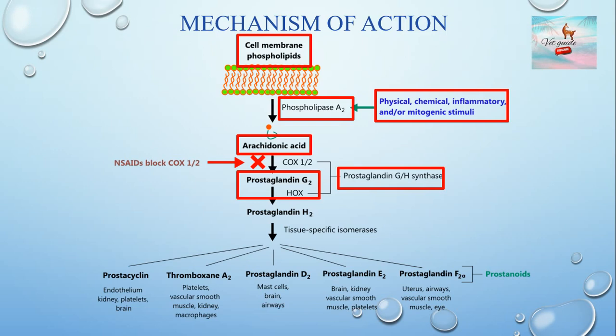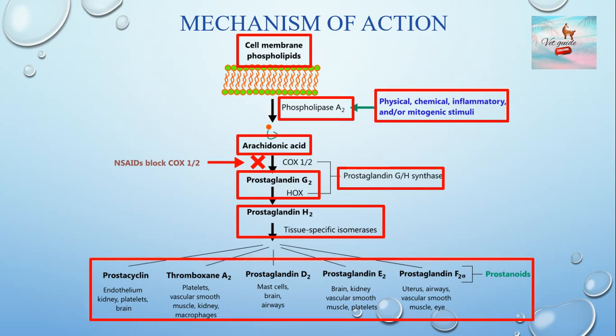The enzyme prostaglandin G and H synthase has cyclooxygenase and hydroperoxidase activity. It converts arachidonic acid to prostaglandin H2, which is then converted by tissue-specific isomerases into a number of different inflammatory mediators called prostanoids. NSAIDs inhibit the cyclooxygenase components and block the formation of prostaglandin G2.